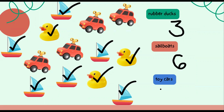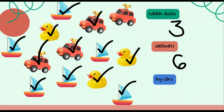Let's count how many toy cars we have. Are you ready? Count with Miss K. Here we go: one, two, three, four. Awesome job! We have four toy cars. In this set of objects we have three rubber ducks, six sailboats, and four toy cars. Excellent job!